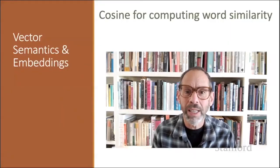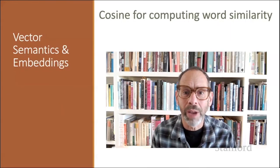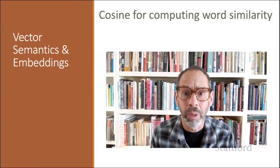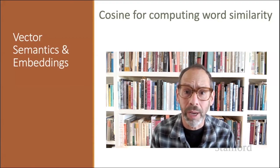We've seen in detail the vector cosine — the most common similarity algorithm for two word vectors.